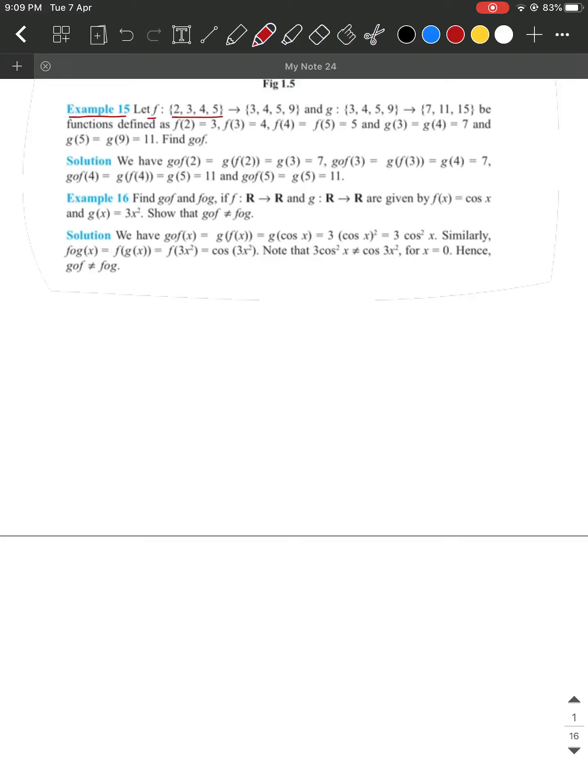F is a function defined from set A which has the elements 2, 3, 4, 5 to set B which has the elements 3, 4, 5, 9.